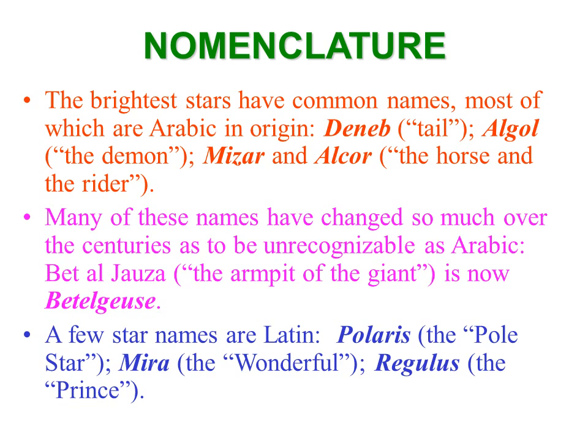The brightest stars have common names, many of which are Arabic in origin — such as Deneb, meaning 'tail,' in the constellation Cygnus; Algol, 'the demon,' an eclipsing binary variable star in Perseus; and Alcor in Ursa Major, also known as 'the horse and the rider.' These names have changed so much over the centuries that they don't bear much resemblance to the original Arabic.